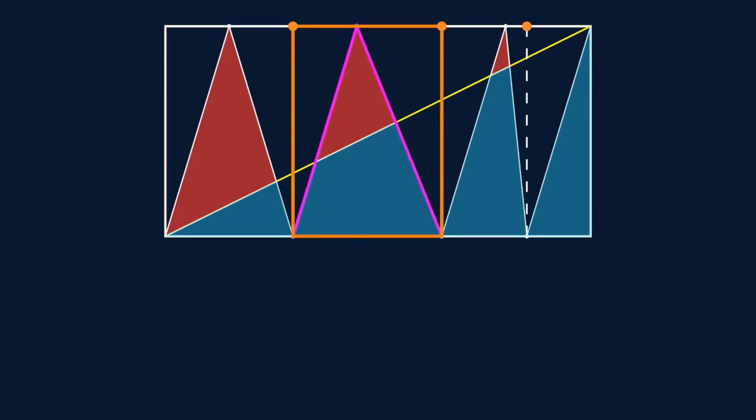And the same thing is true about this pink triangle and this pink triangle and this pink triangle. Each is half of the areas of their corresponding orange rectangles. So in total all the pink triangles have area summing to half of the total rectangle.